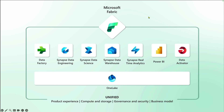At this moment, Microsoft Fabric comes with seven important workloads. These workloads are Data Factory, Synapse Data Engineering, Synapse Data Science, Synapse Data Warehouse, Synapse Real-Time Analytics, Power BI, and Data Activator. With this Fabric umbrella, all these workloads are stored under one-stop solution called OneLake.